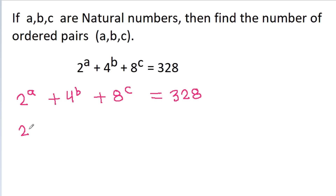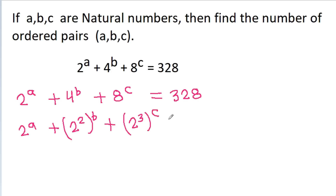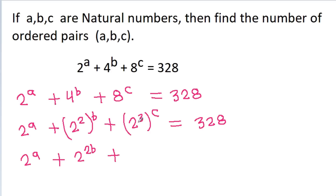We rewrite: 4 is 2 squared, so 4^b becomes 2^(2b), and 8 is 2 cubed, so 8^c becomes 2^(3c). The equation becomes 2^a minus 2^(2b) minus 2^(3c) is equal to 328.